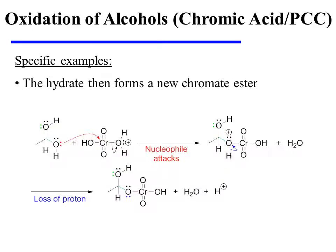This hydrate is then capable of forming a new chromate ester. One of the two hydroxyl groups will attack chromium, displacing water as a good leaving group. The oxonium ion sheds a proton, and the new chromate ester results.